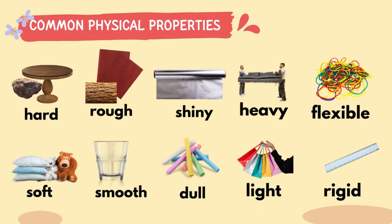Here are some common physical properties: hard, soft, rough, smooth, shiny, dull, heavy, light, flexible, and rigid.